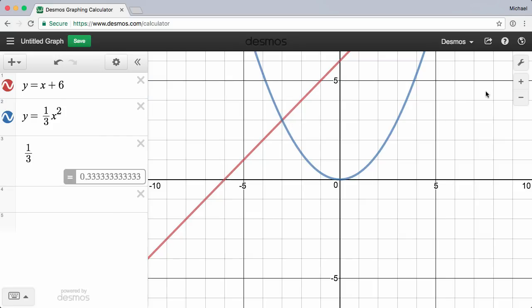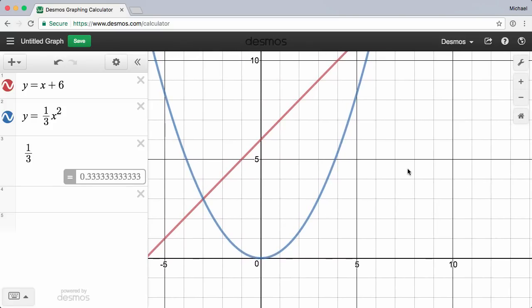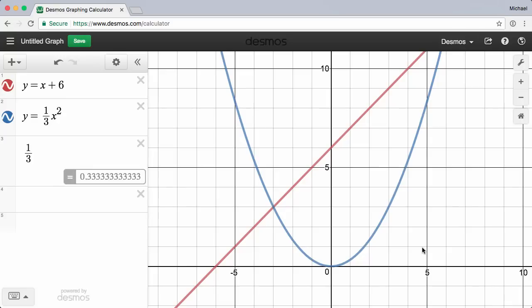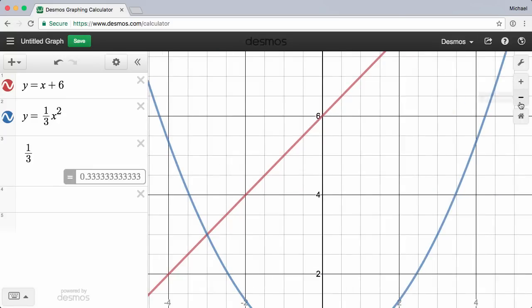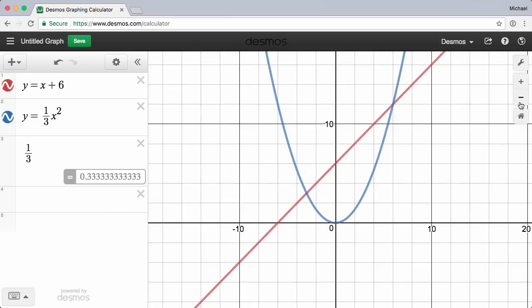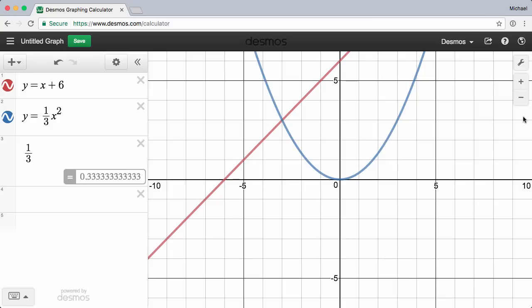Adjusting the viewing window is easy too. Click, hold, and drag to move the graph paper around, or use zoom in, zoom out to get a close up or big picture view. Want to go back to the default? Just press the home icon to reset the window.